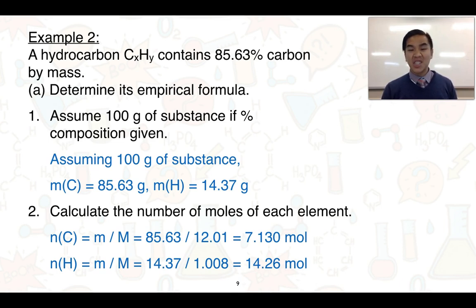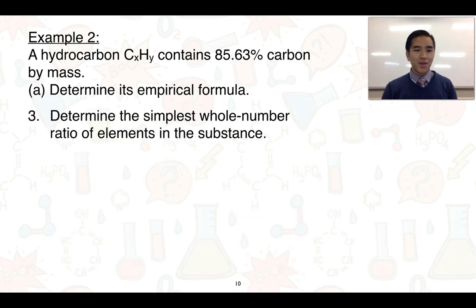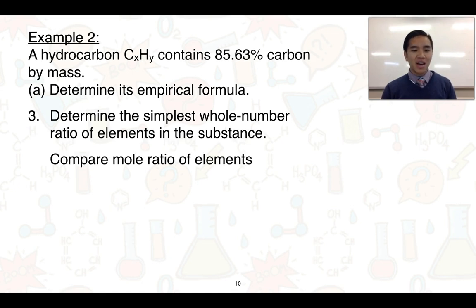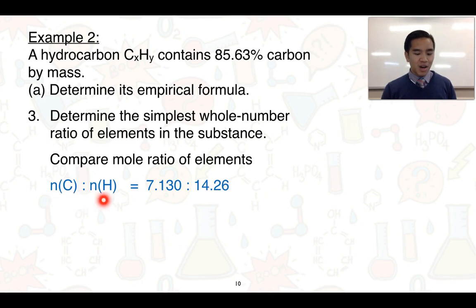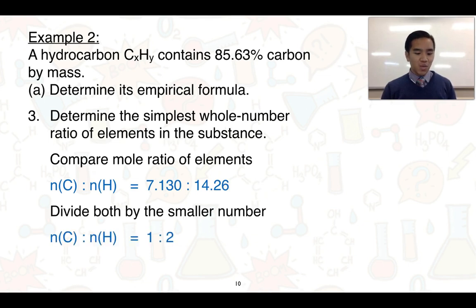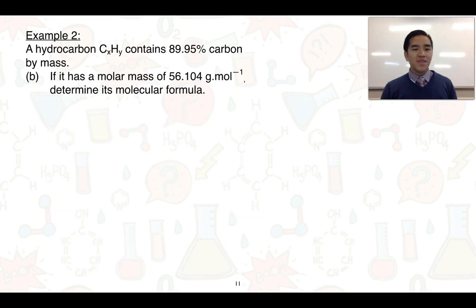It's worthwhile to check and confirm these values. Step three is to determine the simplest whole number ratio. Comparing the moles: carbon to hydrogen equals 7.130 to 14.26. Dividing both by the smallest value, 7.130, we get a ratio of 1 to 2. This tells us that the empirical formula for this hydrocarbon is CH2.